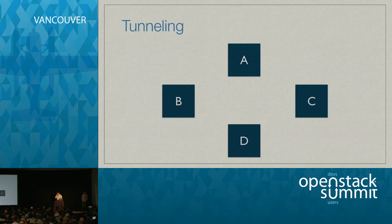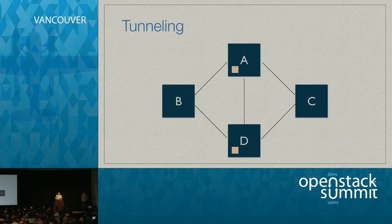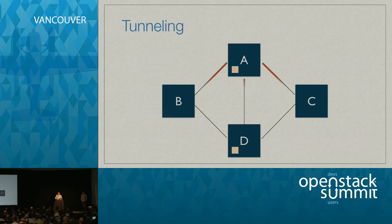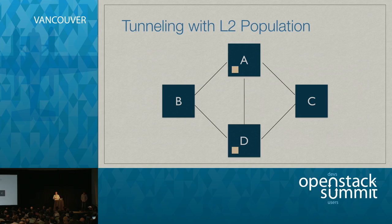Assuming those lettered boxes are hosts, we'll build a mesh of tunnel networks like this with the OVS L2 agent. Previous to L2 population, the way this worked was we would essentially flood broadcast traffic across to figure out where the other VM was. L2 population was a feature implemented a couple of releases ago — it's more intelligent about building peer-to-peer tunnels.